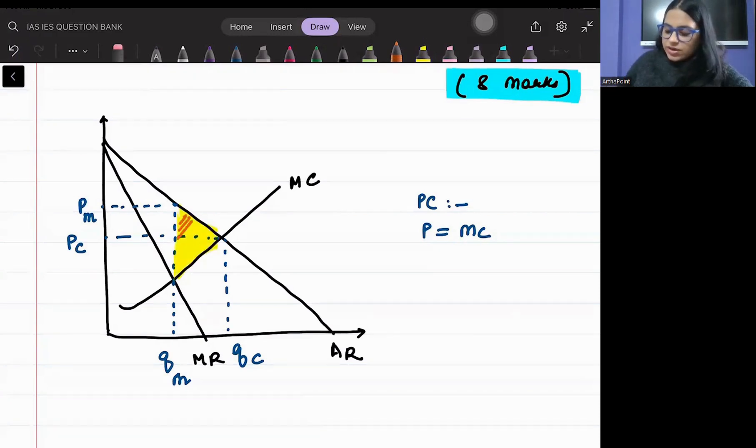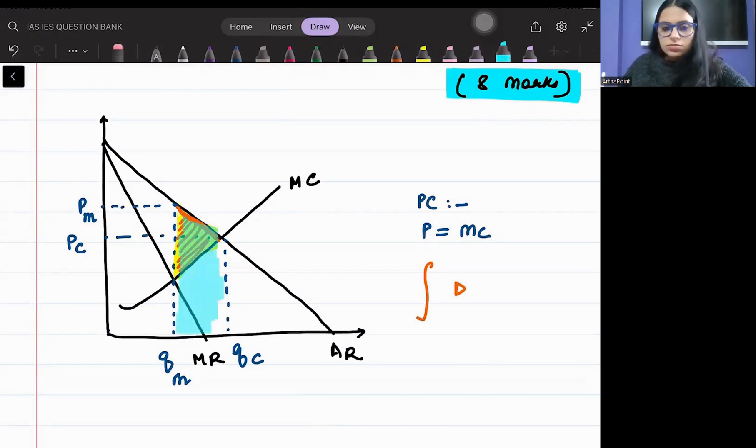The aim is to find out this deadweight loss. And ye deadweight loss kaise nikal sakta hai - if I will integrate the demand curve, the AR curve, then I will get the area under the AR curve. And if I minus the area under marginal cost curve from this, I will get the area in between. So this is exactly what I am going to do - I will find the area between the demand and marginal cost curve between these two quantities QM and QC. That will give me my deadweight loss.